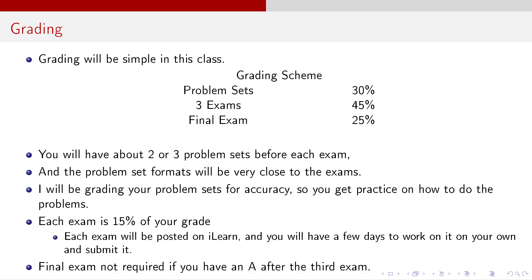Let's talk about how this course is going to be graded. You're going to have problem sets, exams, and a final. Problem sets are 30% of your grade. There are three exams at 45% total — each one is 15% of your grade. The final exam is 25% of your grade. Before each exam you'll have at least two or three problem sets, and the problem sets will be pretty close to the exam, so if you do well on the problem sets you'll theoretically do very well on the exams. I will be grading the problem sets for accuracy. If you have an A after the third exam, you don't have to take the final — you're exempt.